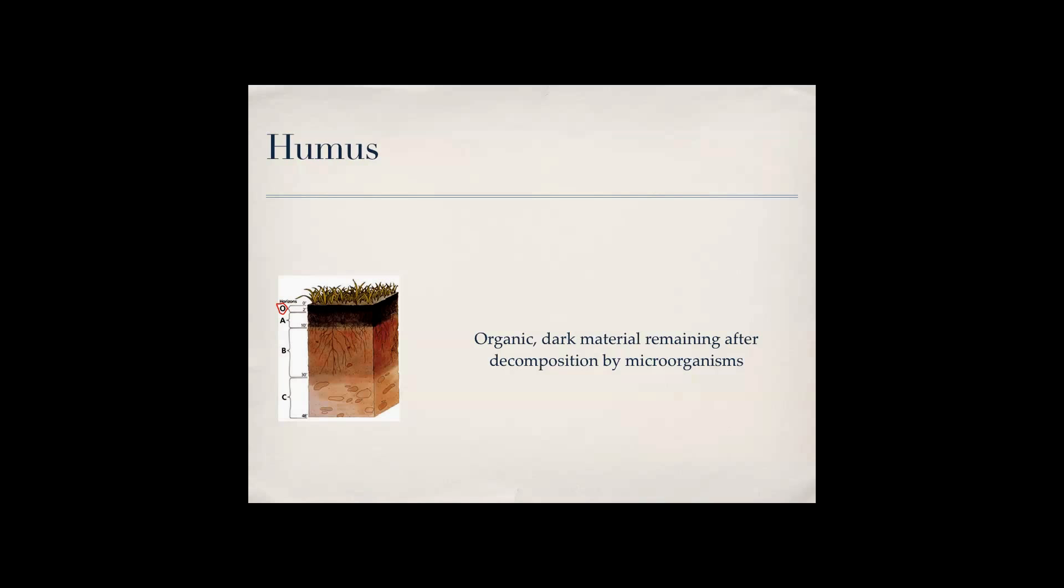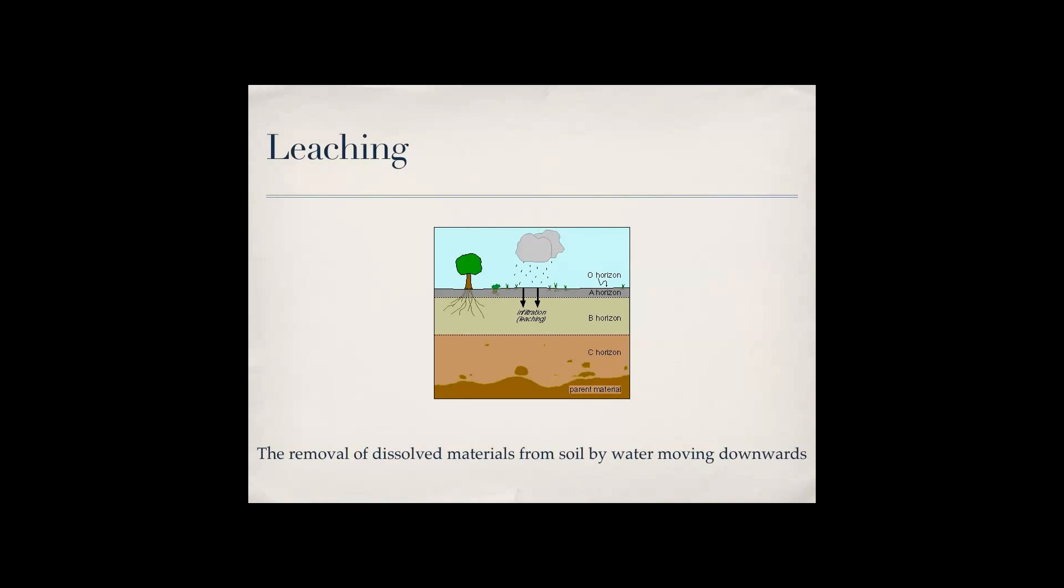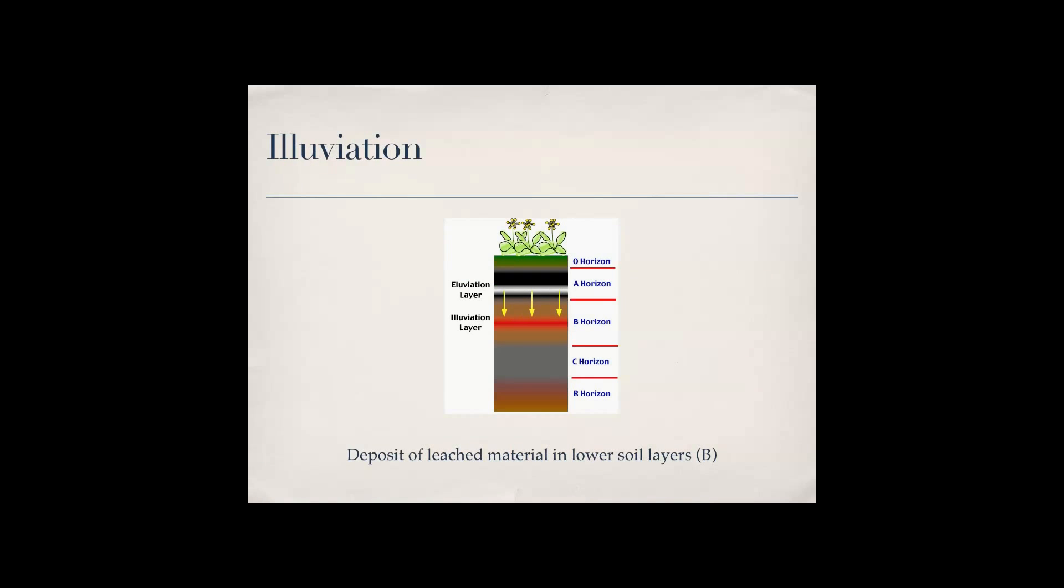Leaching is the removal of dissolved materials from soil by moving water downwards. So if there's stuff in the soil in the O or A horizon, those materials move down by getting rained on or whatnot. That's called leaching. Now the alluviation layer is what forms in the B horizon and that's where all the leached material goes.